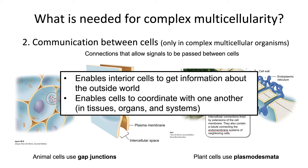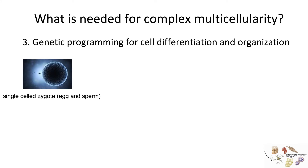Cell communication enables interior cells to get information about the outside world. If cells in contact with the outside world receive signals, those signals can be communicated between cells. It also enables cells to coordinate with one another in tissues, organs, and organ systems.